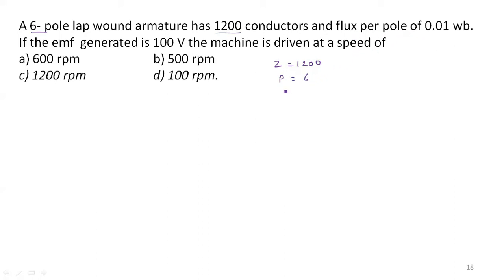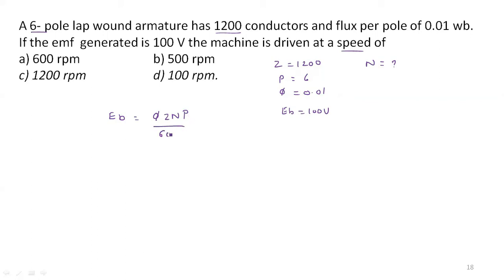Flux per pole φ equals 0.01 Weber. The generator EMF Eb equals 100 volts, and the machine is driven at a speed to be found. So n equals the speed value. The EMF formula is: Eb equals φZNP divided by 60A, where A is the number of parallel paths. For lap winding, A equals P, so the number of parallel paths equals the number of poles.